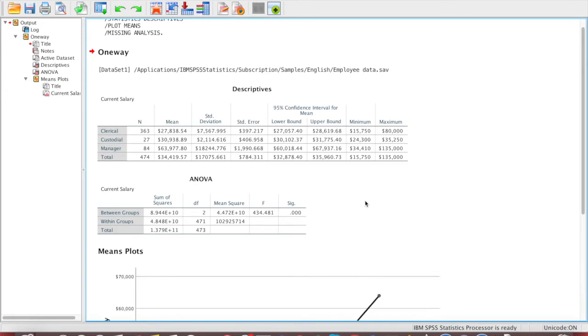And then this is the output that we generate from the table. So first, it has a descriptive table. This shows the mean, standard deviation, 95% confidence list, and everything.